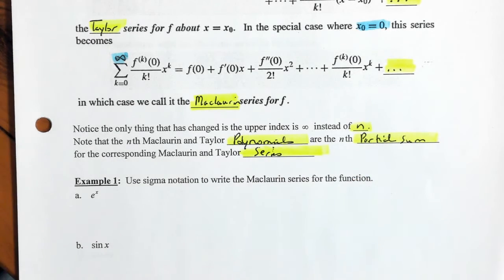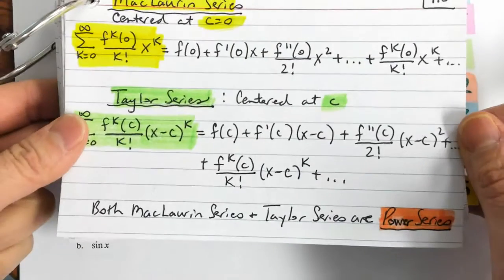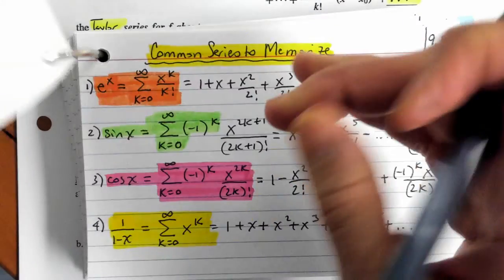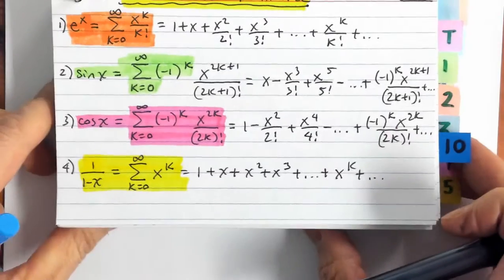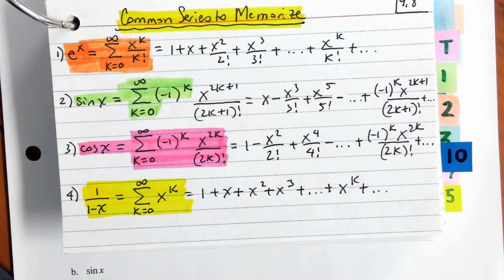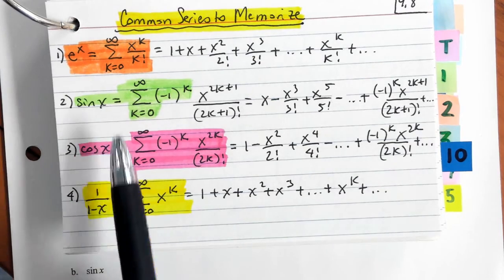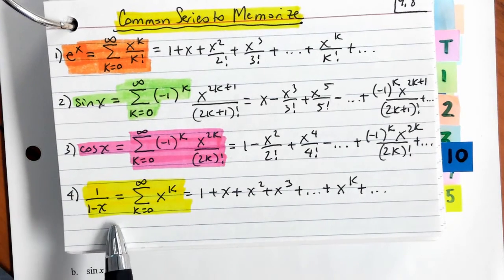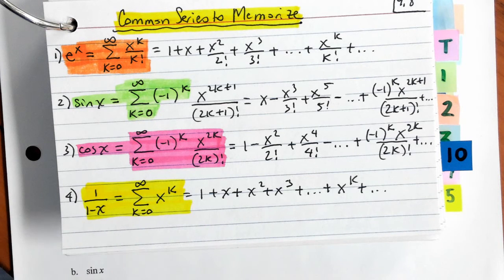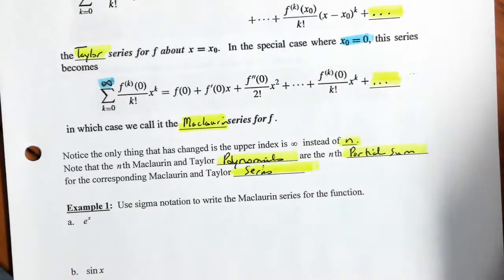On Blackboard I've asked you to copy these Maclaurin series. You should memorize these four: e to the x, sine of x, cosine of x, and one over one minus x. These come up so much it's not worth generating them every single time. If you have the capacity, also memorize the natural log of x and tangent of x, but those four are the most frequent.